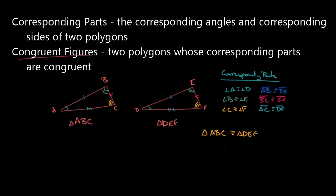The way I write this congruence statement is super important because I need all the corresponding parts to match up. Angle A and angle D must be congruent, angles B and E must be congruent, and angles C and F must be congruent. In addition, side AB and side DE must be congruent, sides BC and EF must be congruent, and sides AC and DF must be congruent. Just by looking at my congruence statement, I can tell a lot of information about these two triangles and see all the corresponding parts that match.